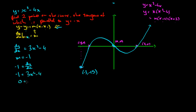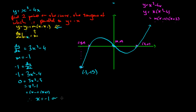Rearranging gives us 0 equals 3x squared take 3, which equals x squared take 1, which factors as (x minus 1)(x plus 1). Therefore x equals negative 1 or x equals 1, each solution corresponding to one of the two tangent points.